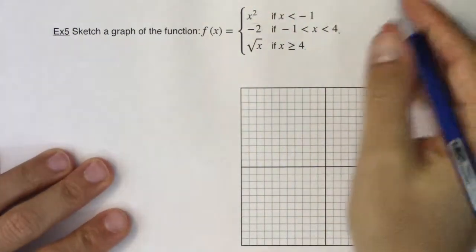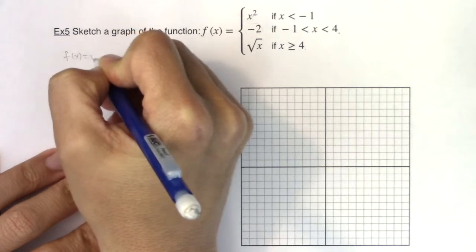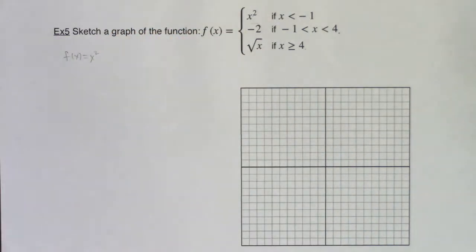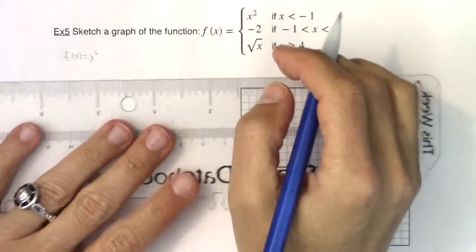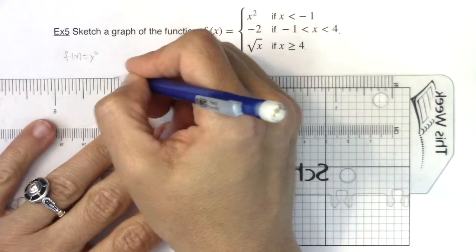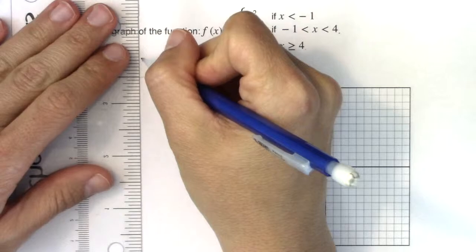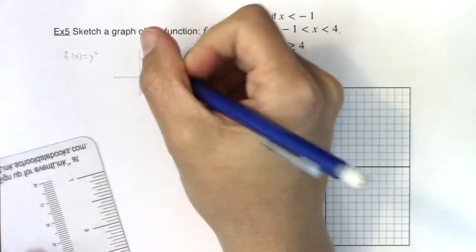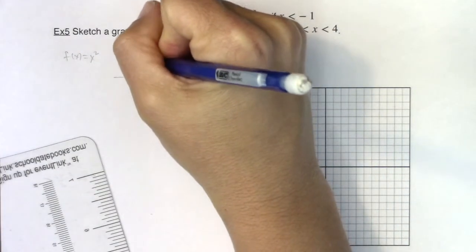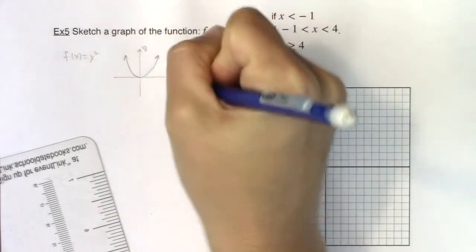So let's do a quick sketch of each of these. I want to look at f of x equaling x squared. I'm going to try and make this a little bit smaller than we did in example four because now I have three of them I need to graph out. So y equals x squared is my basic parabola. I'm not even going to label and scale, I'm just going to draw a picture. It looks something like that.